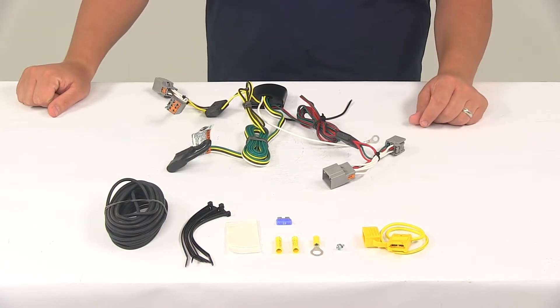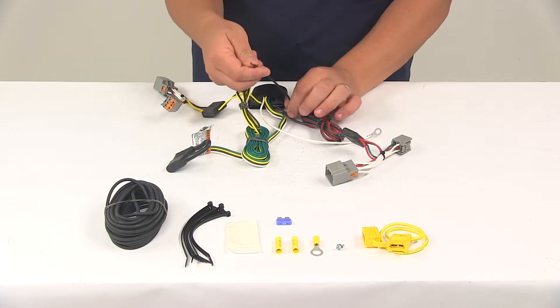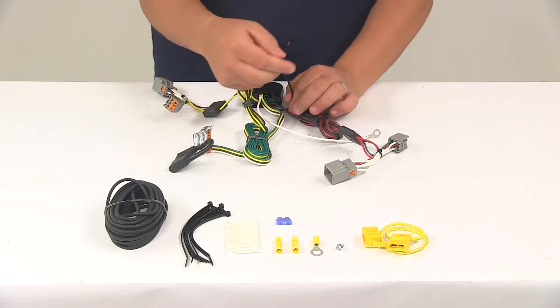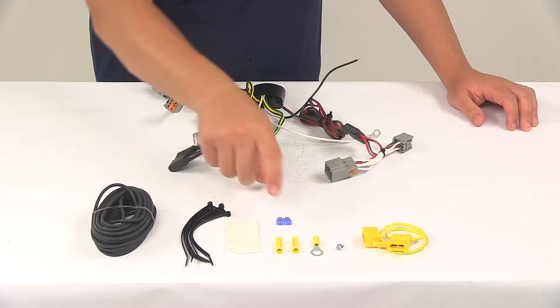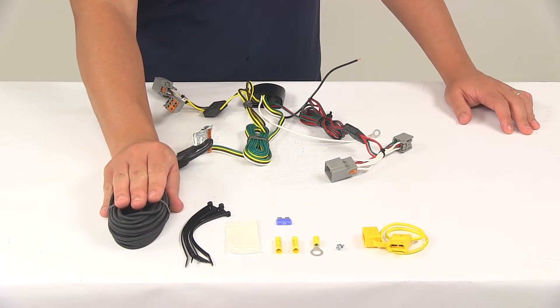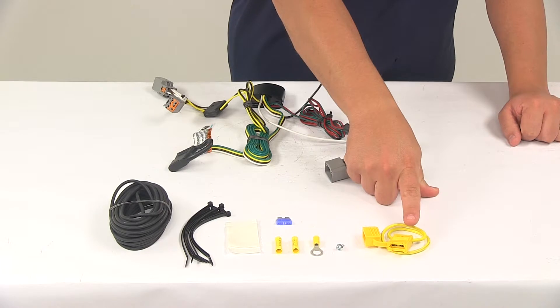Once you have all that done, you'll need to run the hot lead to the vehicle battery. The hot lead is going to be the short black wire coming out of the converter box. This is going to get connected to the bundled black wire with one of the included butt connectors. The other end of the bundle runs to the vehicle battery, gets another butt connector attached to it, and connects to one half of your fuse holder.